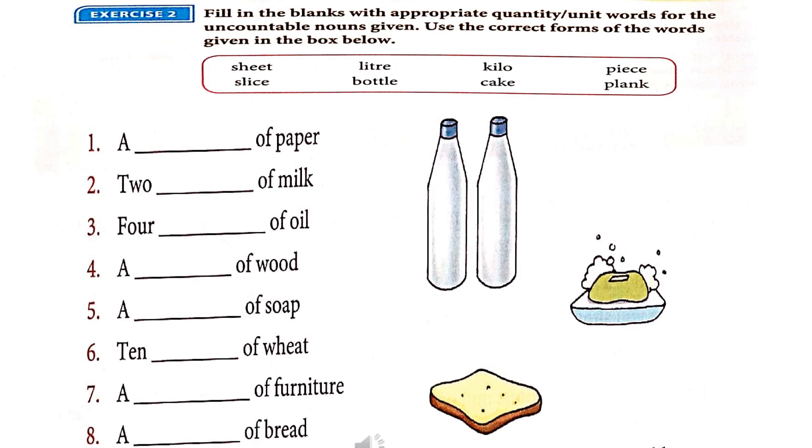Sheet, liter, kilo, piece, slice, bottle, cake, plank. By using these words, we have to fill the following sentences. First one: a dash of paper. We know that for paper we are using sheet. A sheet of paper.